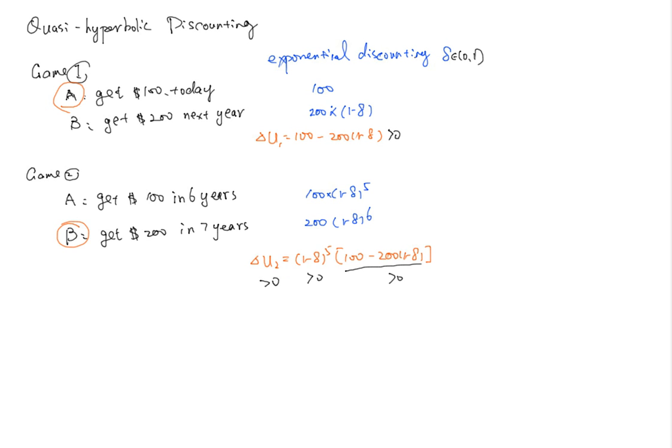So that means you should choose A in game two as well. So that is exactly why exponential discounting or classical discounting theory does not work out.